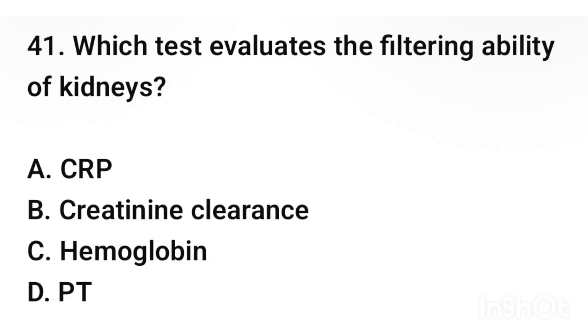Question number 41. Which test evaluates the filtering ability of kidneys? The correct answer is option D: Creatinine clearance.